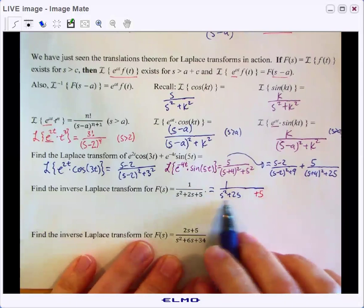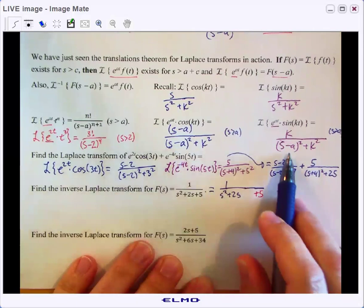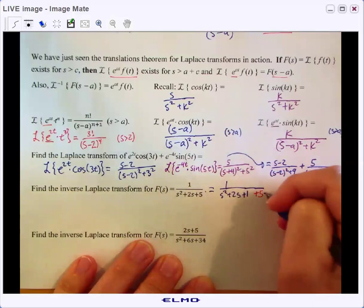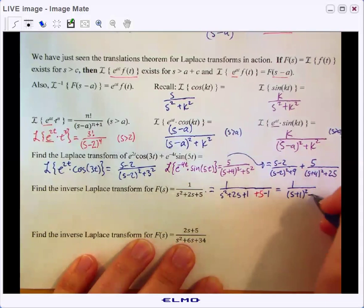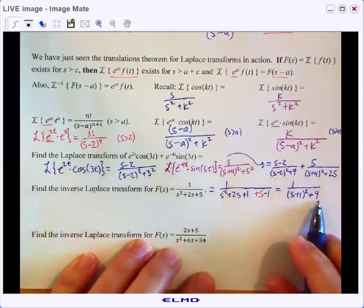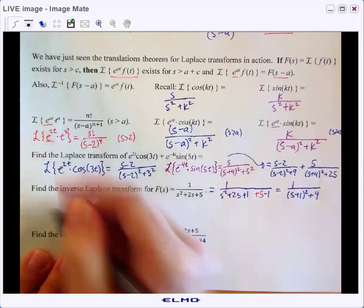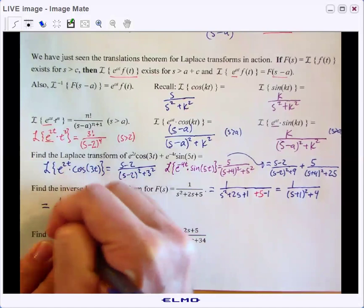I notice that I can complete the square, which will be nice because that might help me out here. So if I add 1, I'm going to need to subtract 1 on the denominator to compensate for that. And so that is going to give me 1 over s squared plus 2s plus 1. The reason we did that was we completed the square. So we'll have s plus 1 squared plus 4, and 4 we notice is 2 squared.